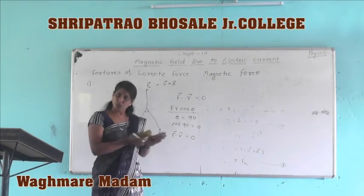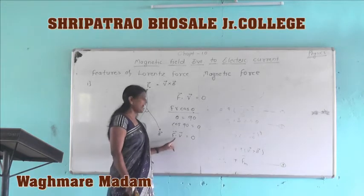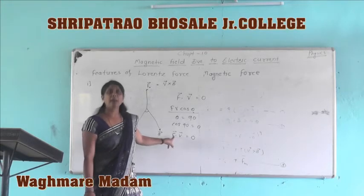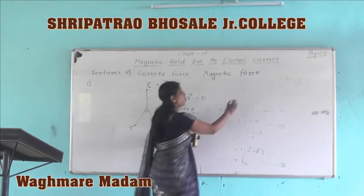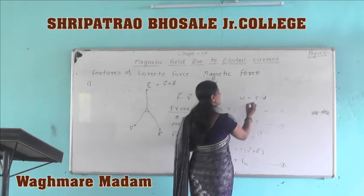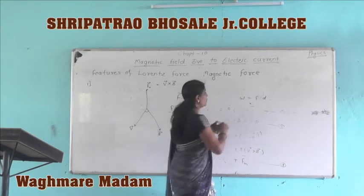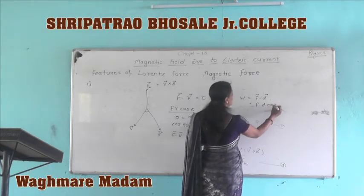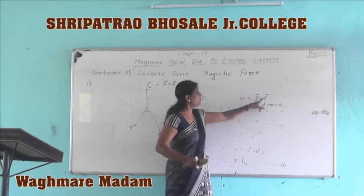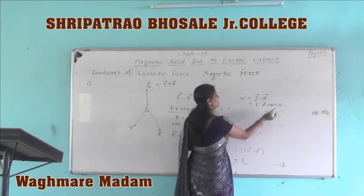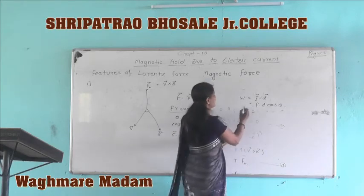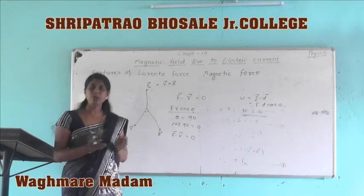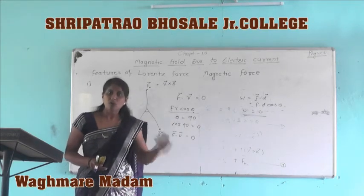We know that work done equals force into displacement. Since velocity and force are perpendicular to each other, displacement and force are also perpendicular to each other. Therefore work = F · d · cos(90°) = 0. That is, the magnetic force does not do any work on a moving charge.